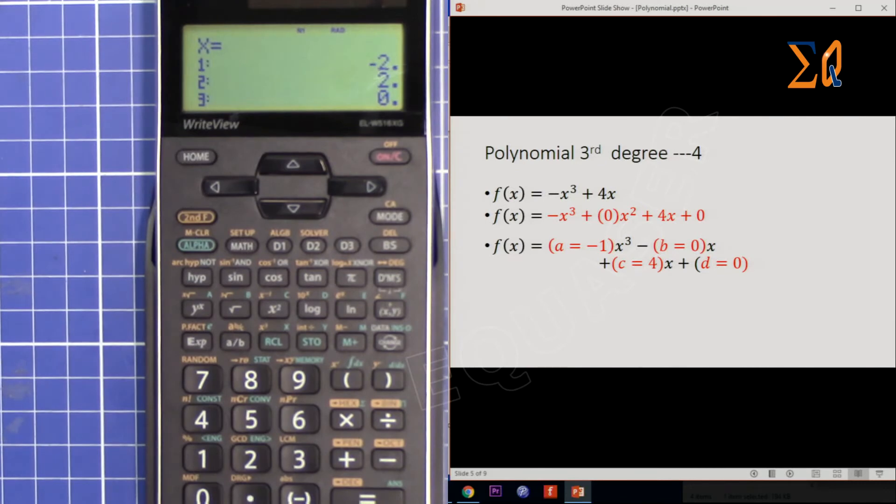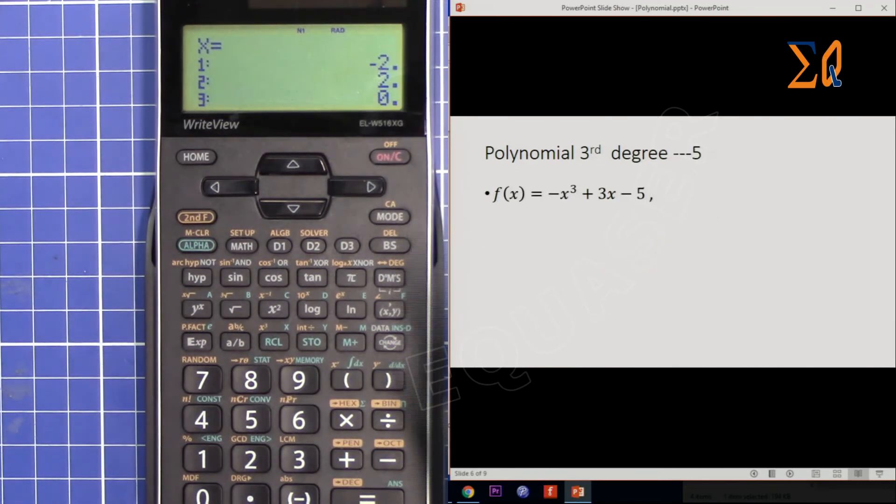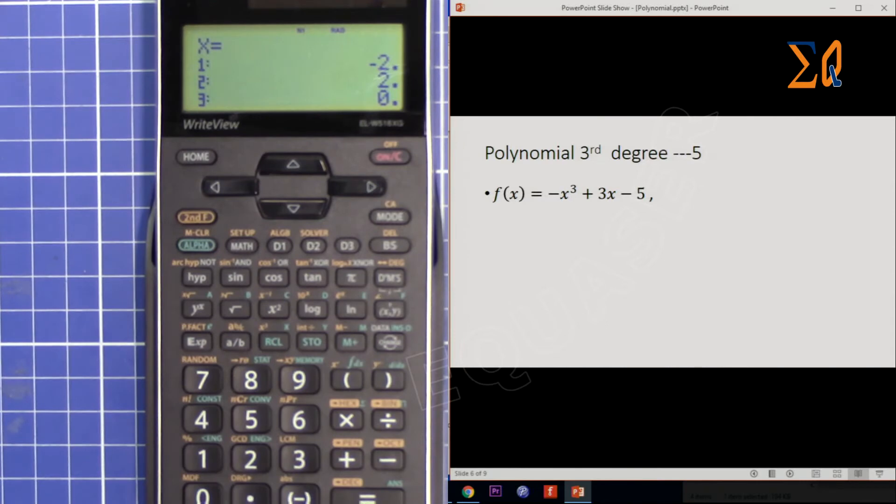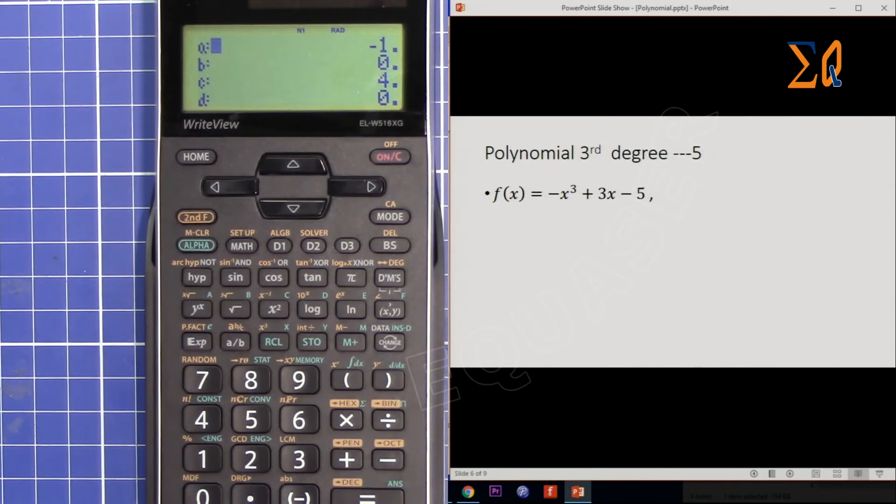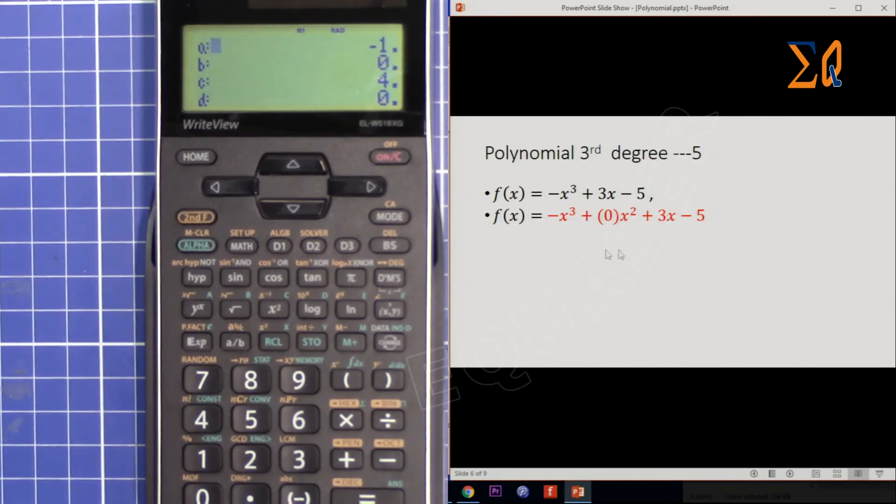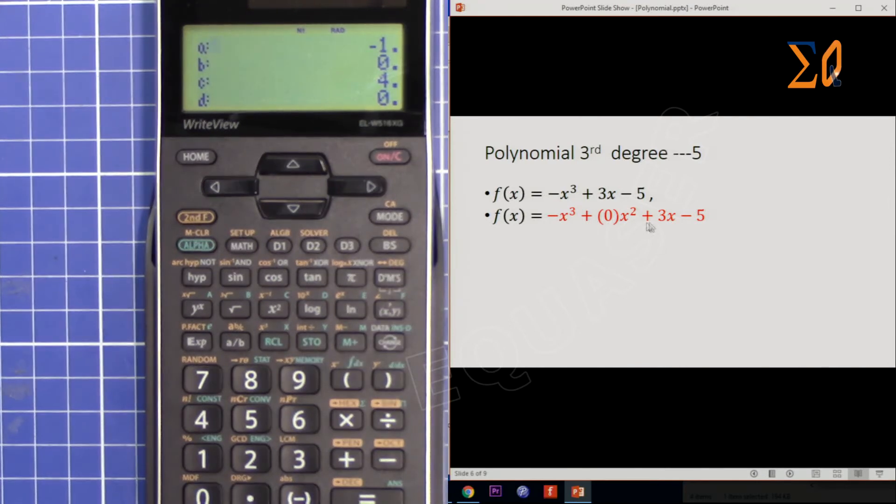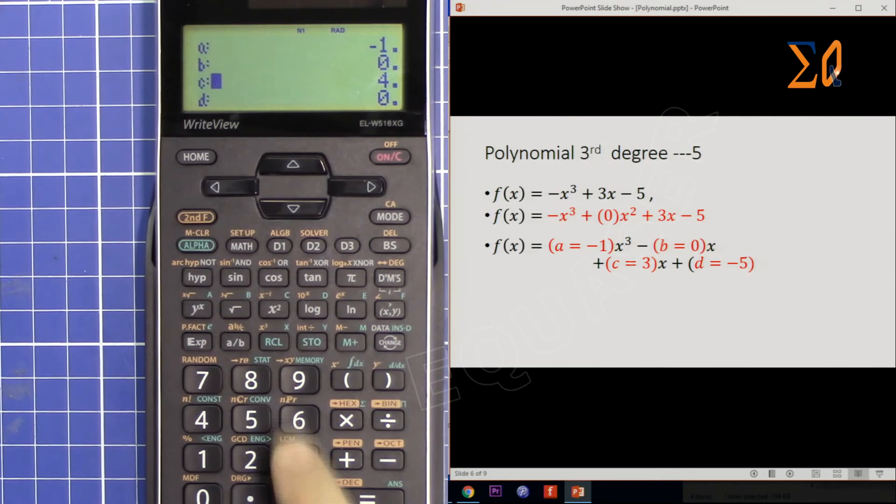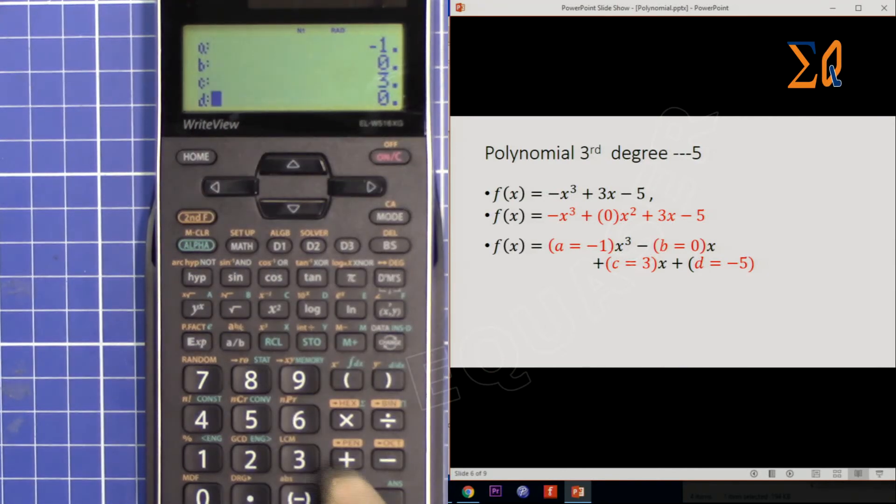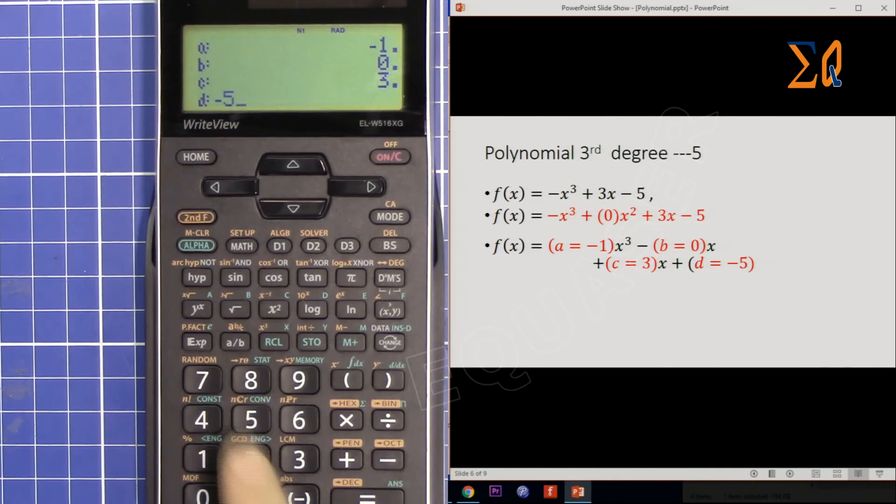Another example, which is the last one. I'm pressing equal sign, equal sign. In this case these are the coefficients. This equation doesn't have x², so we have 0x² and you have to put it. Now -1—I'm pressing lower minus and then 1, 0, and then c is 3, d is -5. So c is 3, and then minus—I'm pressing lower minus—and then 5.